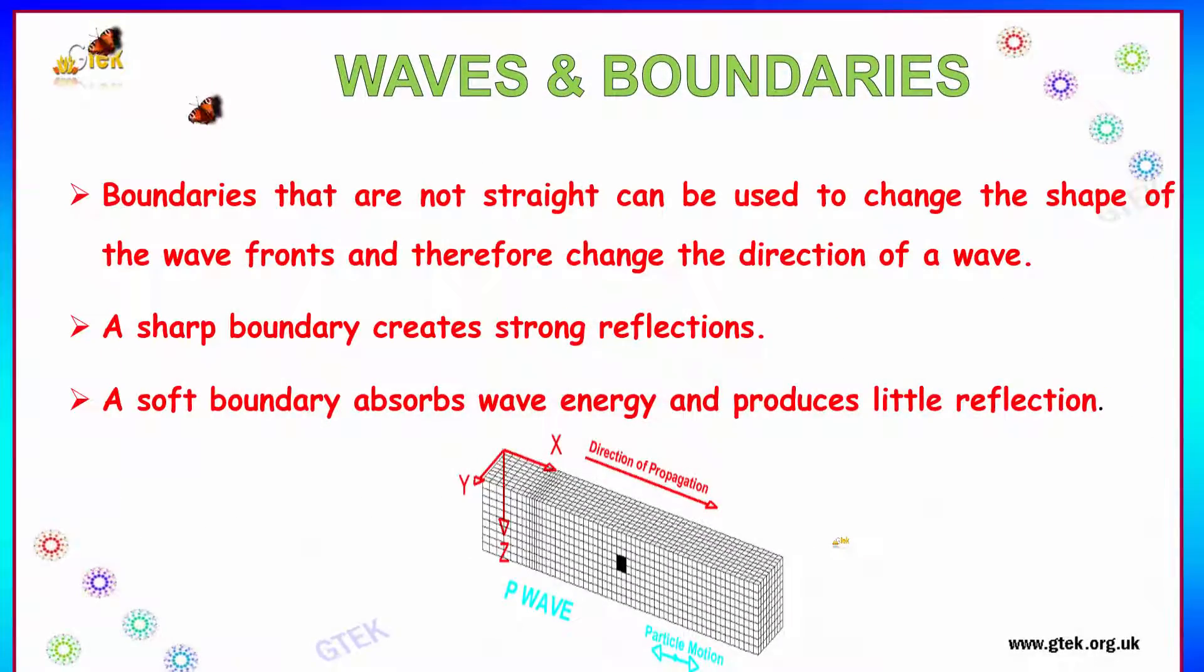Other than this, boundaries that are not straight can be used to change the shape of the wave fronts and therefore change the direction of a wave. A sharp boundary creates strong reflections, and a soft boundary absorbs wave energy and produces little reflection.